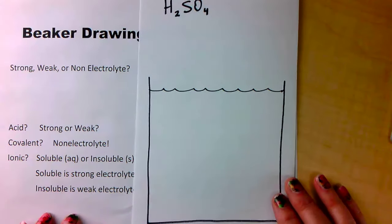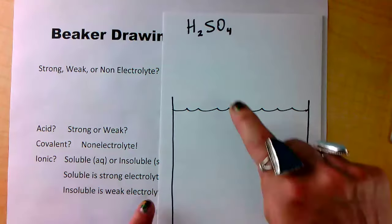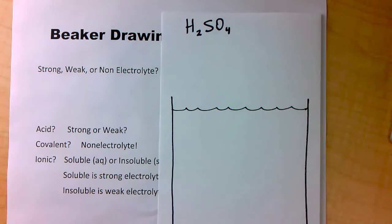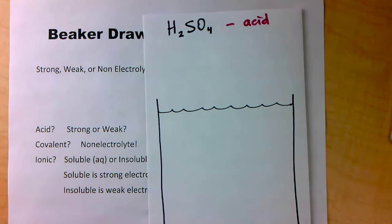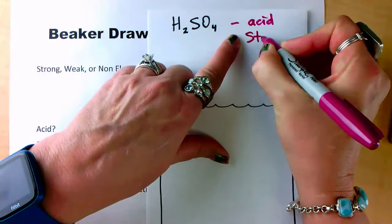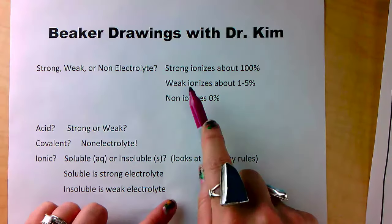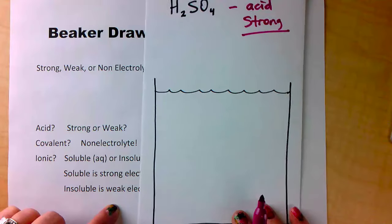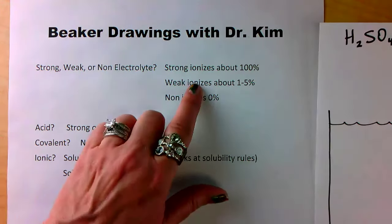Let's start our beaker drawings. The first one is H₂SO₄. Is it an acid? Yes, it is. We're supposed to know if it's strong or weak. H₂SO₄ has a sulfur in it, so its name is sulfuric acid, and H₂SO₄ is in fact a strong acid. If it's a strong acid, what kind of electrolyte is it? It's a strong electrolyte as well. How much do strong things ionize? About 100%.